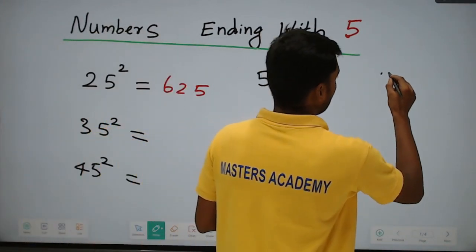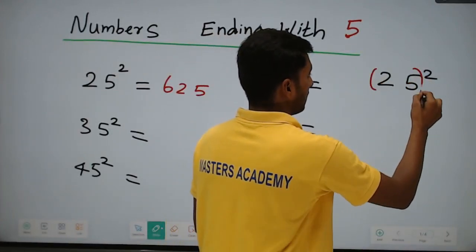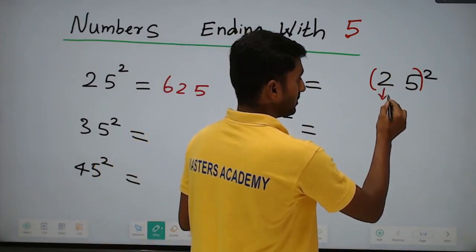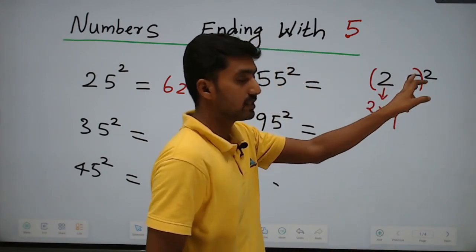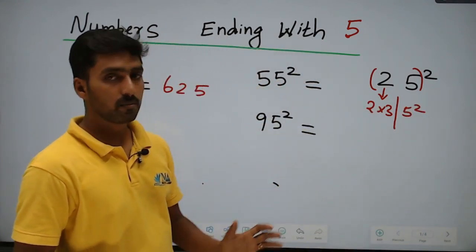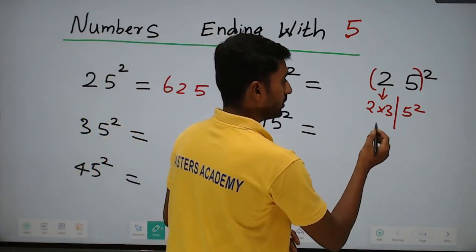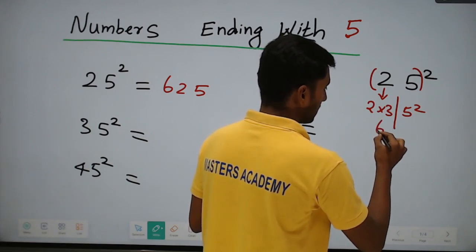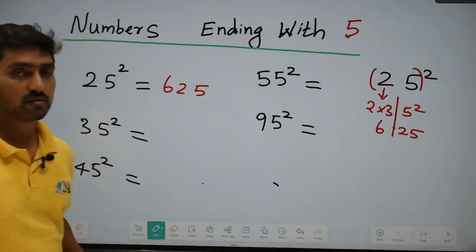Let's take 25 squared. For 25 squared: take the first digit, which is 2, multiply it by the next number, which is 3 — so 2 into 3 equals 6. Then append 25 at the end, since 5 squared is 25. Therefore, 25 squared equals 625.